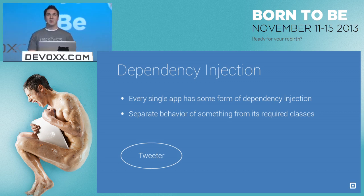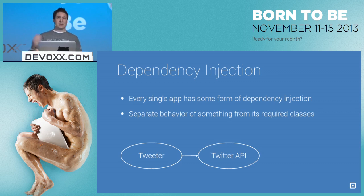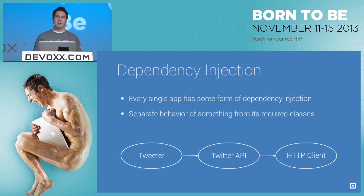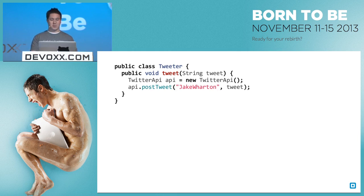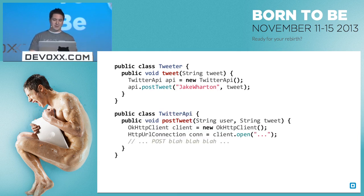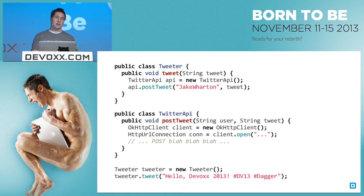As an example, if we have a class that's a tweeter, the tweeter depends on a Twitter API wrapper, which in turn depends on an HTTP client. A relatively naive implementation would be a class that creates an instance of this Twitter API and calls post-tweet whenever I want to tweet. Our Twitter API would create an HTTP client and make the necessary connection. To use this, we would just instantiate it and post a tweet.